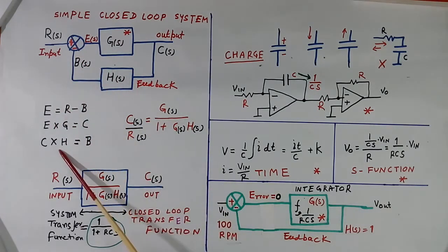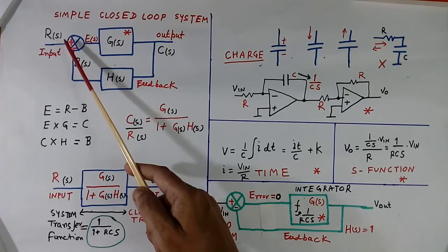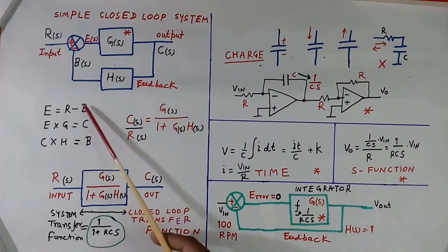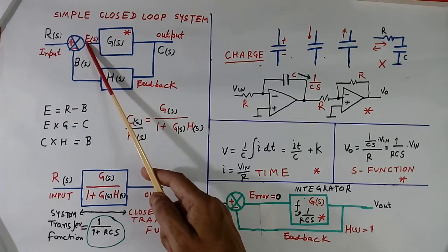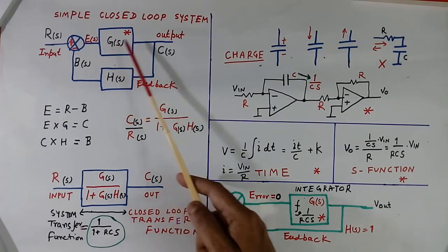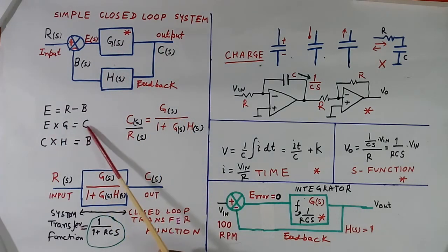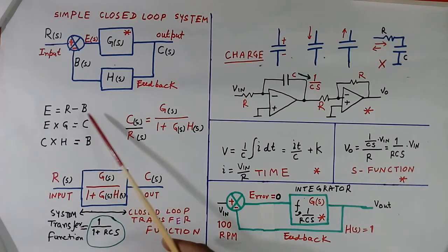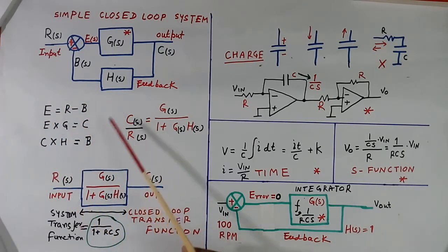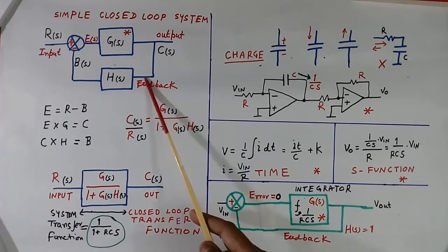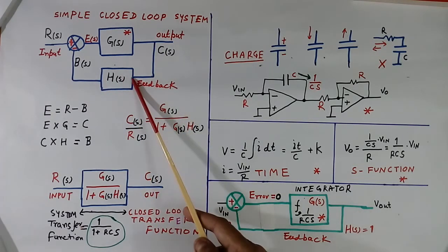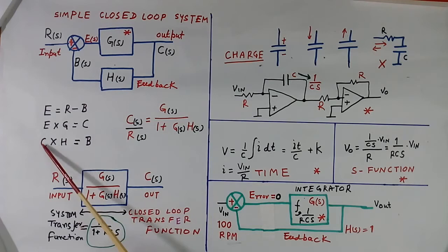Now let us see how this equation came. R minus B is equal to E, because of the plus-minus junction — R minus B equals E. E multiplied by G gives C, so E into G equals C. I have not used S here to keep it simple. Similarly here, this is input, this is output. So C multiplied by S gives B — C into S equals B.